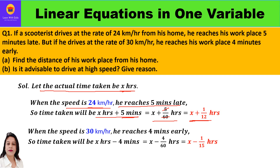When the speed is 30 kilometers per hour, he reaches four minutes early, so the time taken is x minus 4 minutes. Converting 4 minutes to hours by dividing by 60, we get x minus 4/60, which simplifies to x minus 1/15 hours. This is the time taken to reach his office at 30 kilometers per hour.